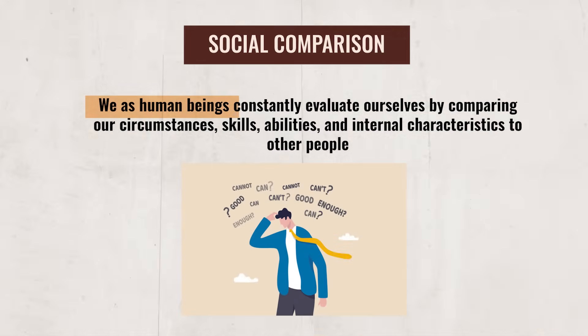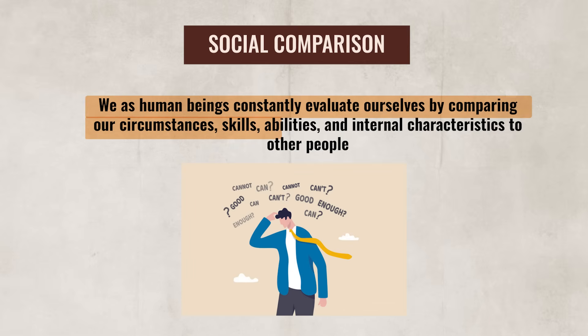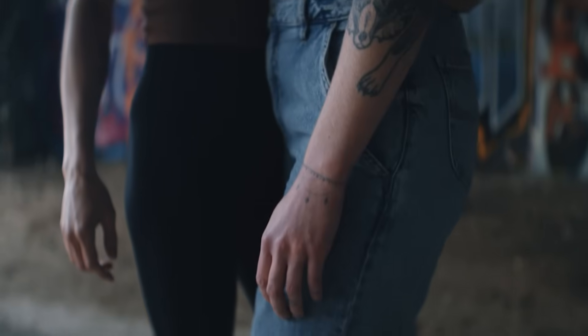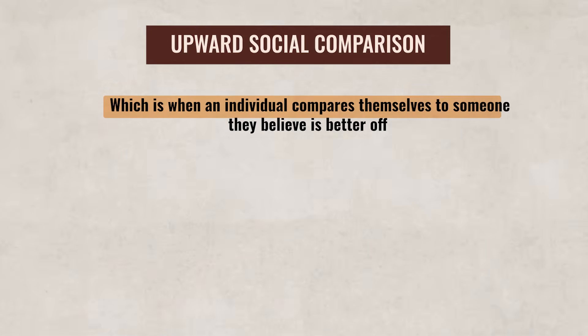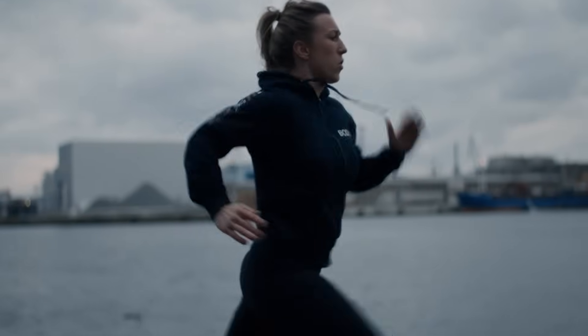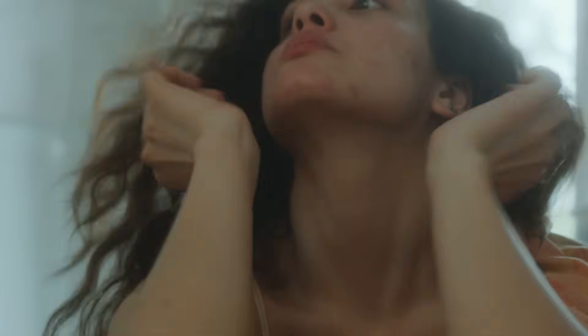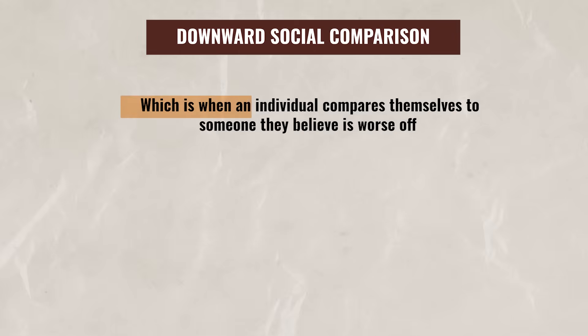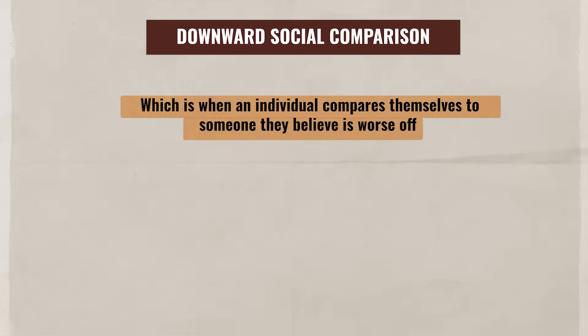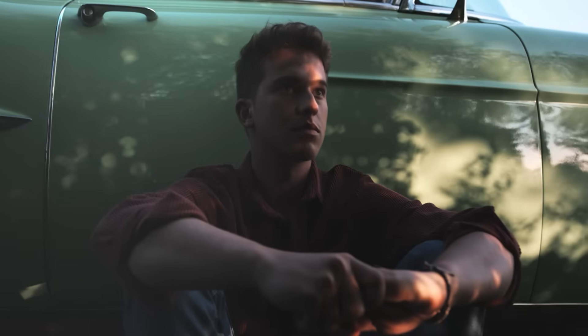There's one more concept to review for perception: social comparison. We as humans constantly evaluate ourselves by comparing our circumstances, skills, abilities, and internal characteristics to other people, which can directly influence how we see ourselves and how satisfied we are with life. People generally use two types of social comparisons. The first is upward comparison, when an individual compares themselves to someone they believe is better off — this can help motivate improvement, but if the gap feels too large, it could cause feelings of inadequacy. The other is downward comparison, when an individual compares themselves to someone they believe is worse off, which can cause them to feel better about their situation but may reduce motivation to improve.